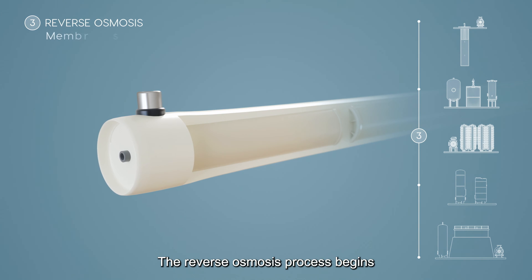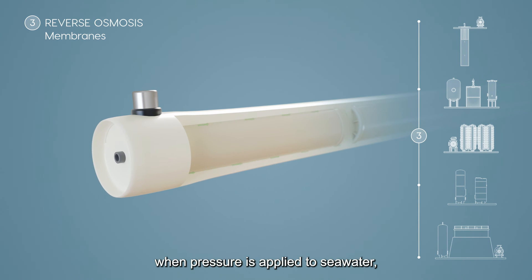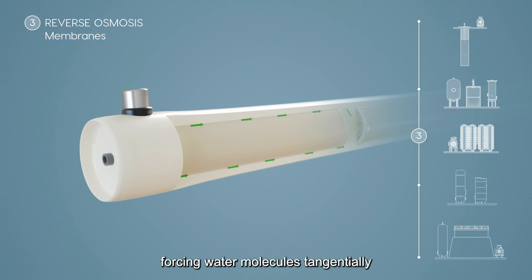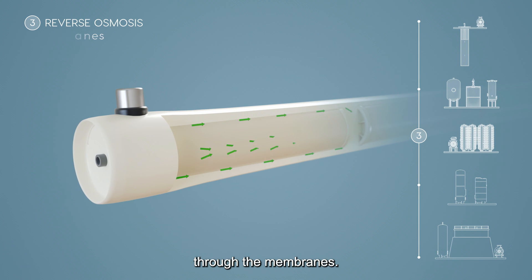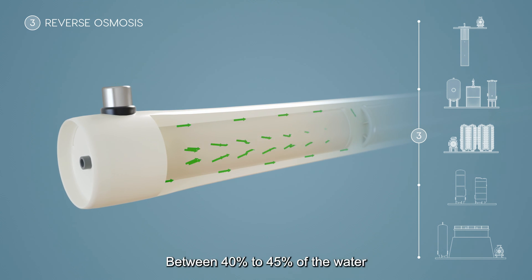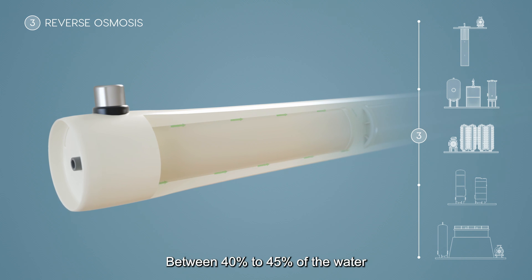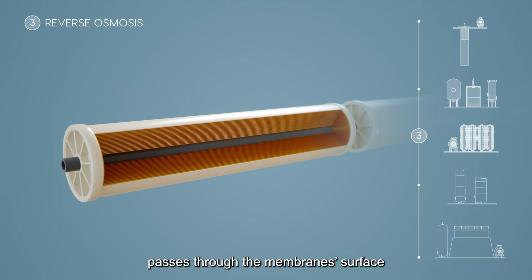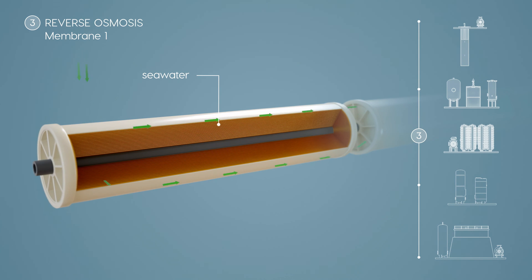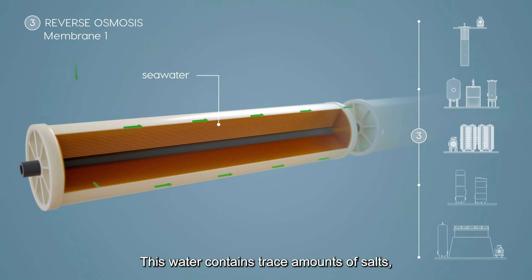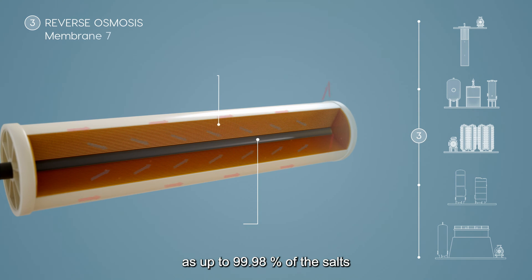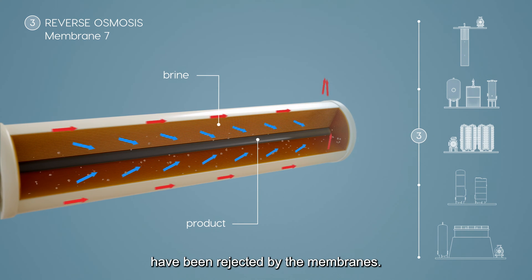The reverse osmosis process begins when pressure is applied to seawater, forcing water molecules tangentially through the membranes. Between 40 to 45 percent of the water passes through the membrane surface and is directed towards the permeate or product collector. This water contains trace amounts of salts, as up to 99.98 percent of the salts have been rejected by the membranes.